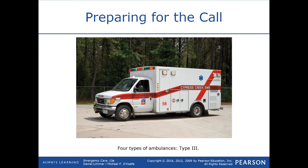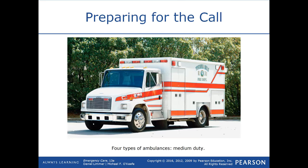A Type 3 ambulance is a modular box mounted on a truck chassis, but there is communication between the box and the cab — it might be a sliding door or a window. The fourth type is a medium duty ambulance; we don't see many of these, but they certainly do exist.